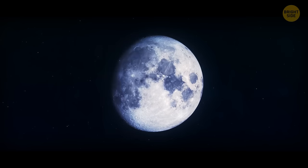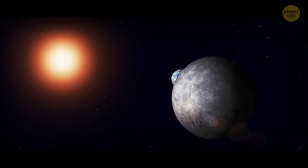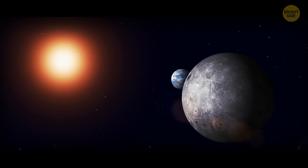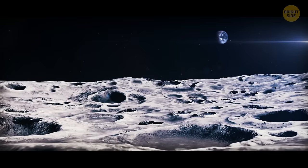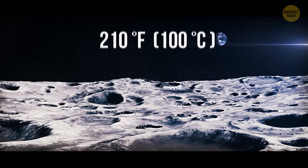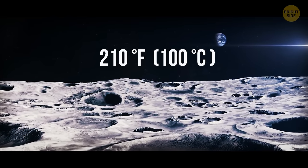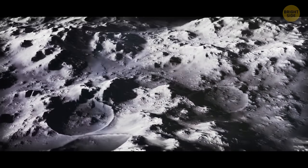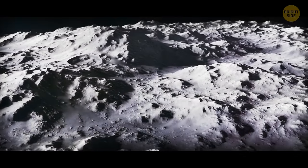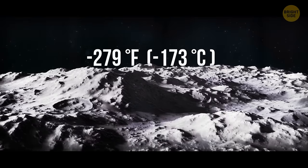The moon is not hot because it doesn't have an atmosphere, so it can't absorb sunlight as our planet does. Its surface gets very hot in the daytime, about 210 degrees Fahrenheit, but since there's no atmosphere, the temperature drops extremely during the night to negative 279 degrees Fahrenheit.